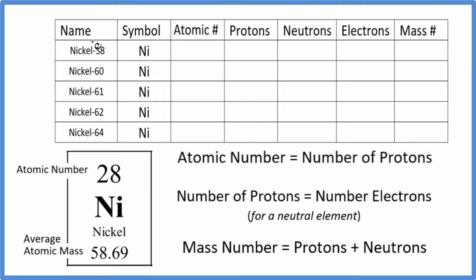So nickel has a number of isotopes. These are the five most common isotopes for nickel. And the only thing different about those are the number of neutrons. And because of that the mass number is different too. We'll take a look at this later on though.